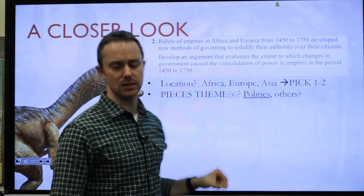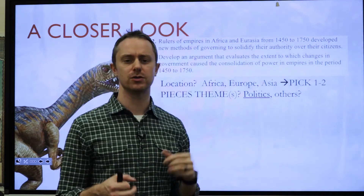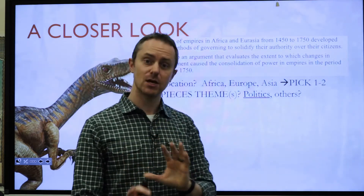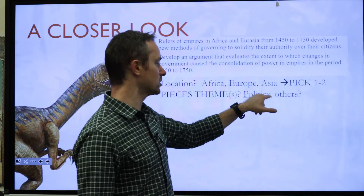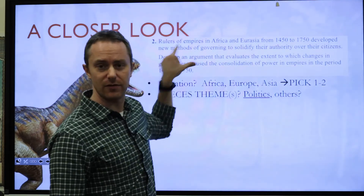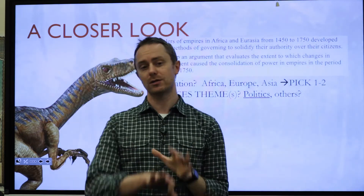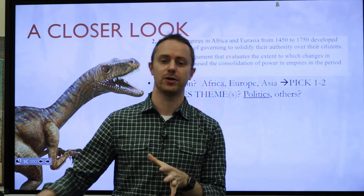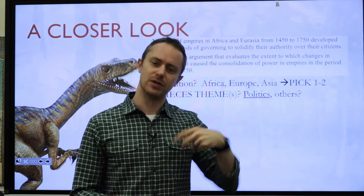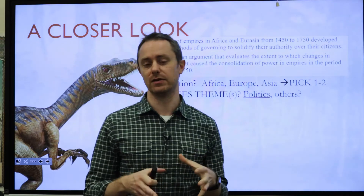Next, the piece's theme. Remember AP Euro, APUSH — you might have different themes for AP Modern World History; you have six different themes as an acronym, so go back and watch the themes video. For this prompt, you want to focus on politics or something closely related to politics, because we have 'methods of governing' right there in the prompt. That is absolutely a political theme. You don't want to spend time focused on how they're interacting with the environment or farming or trading. You're going to focus much more on the political structure of those given empires.